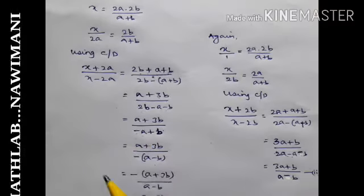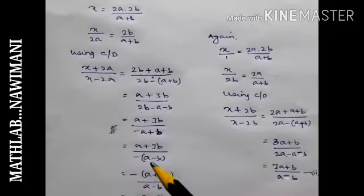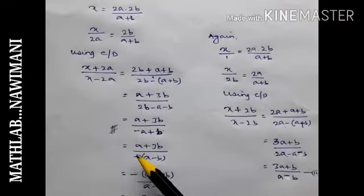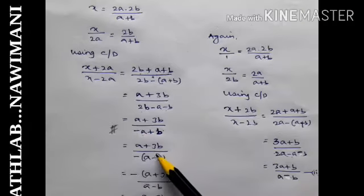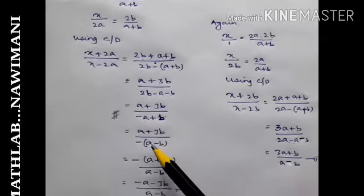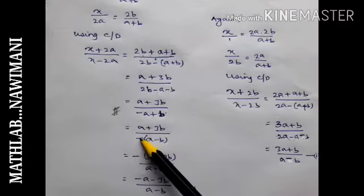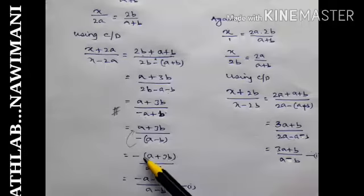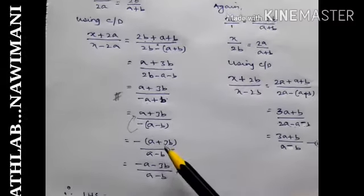And what I will do now is, plus will become minus when you multiply with the minus sign. You have to multiply this minus with minus a and minus 3b.